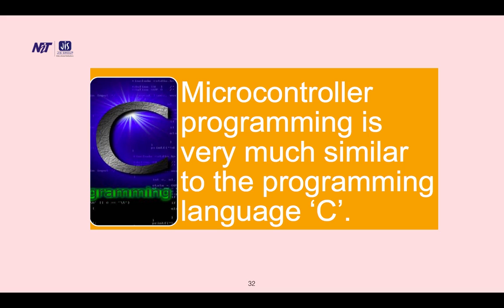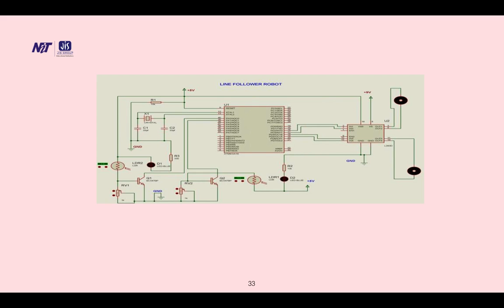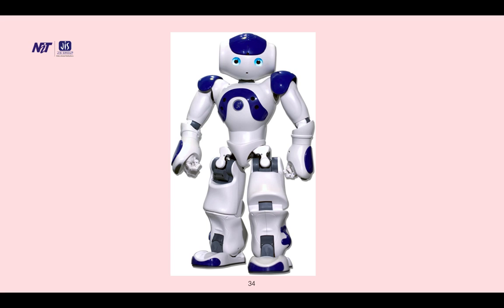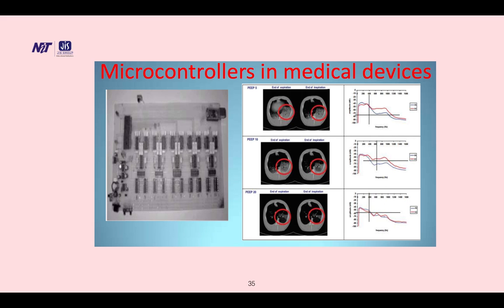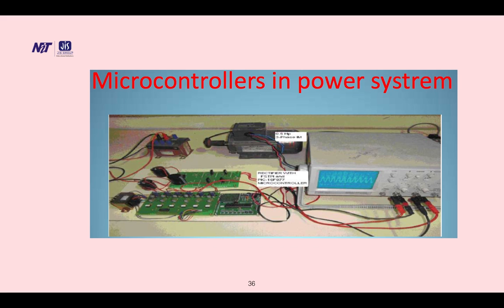This is a line follower robot, how microcontroller can be used in a particular application. This is another application of microcontroller or embedded system in robotics; it is used widely. Microcontroller in medical devices is also used. Microcontrollers in power systems. We can use microcontroller in numerous ways. Everything in modern technology is totally based on microcontroller and embedded technology systems.